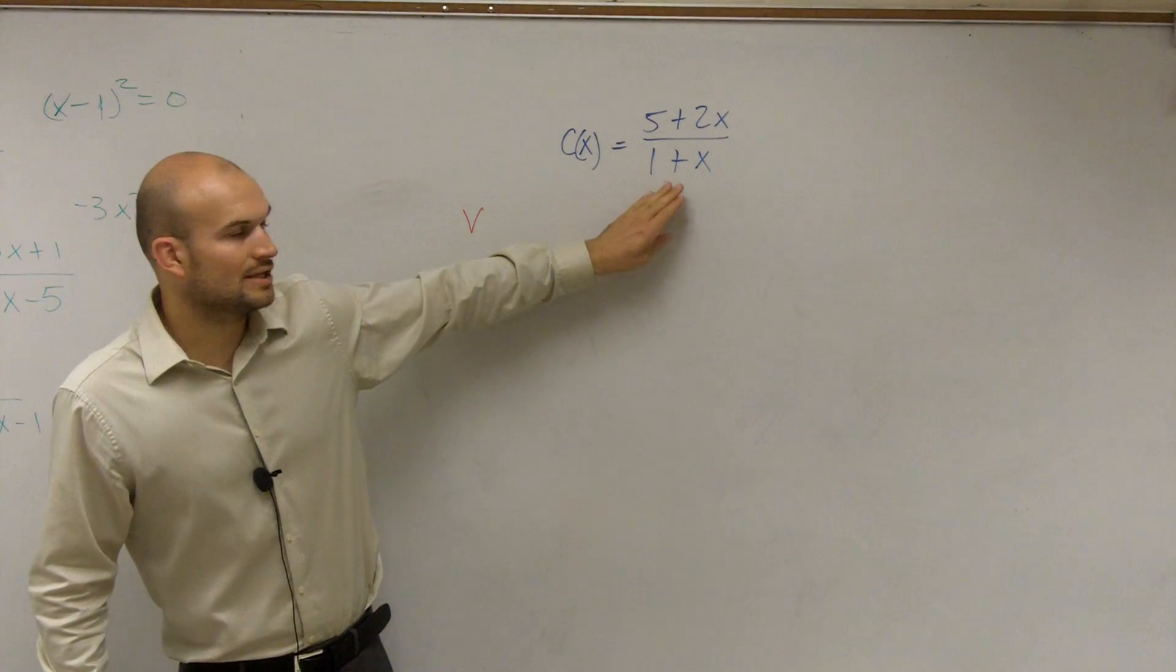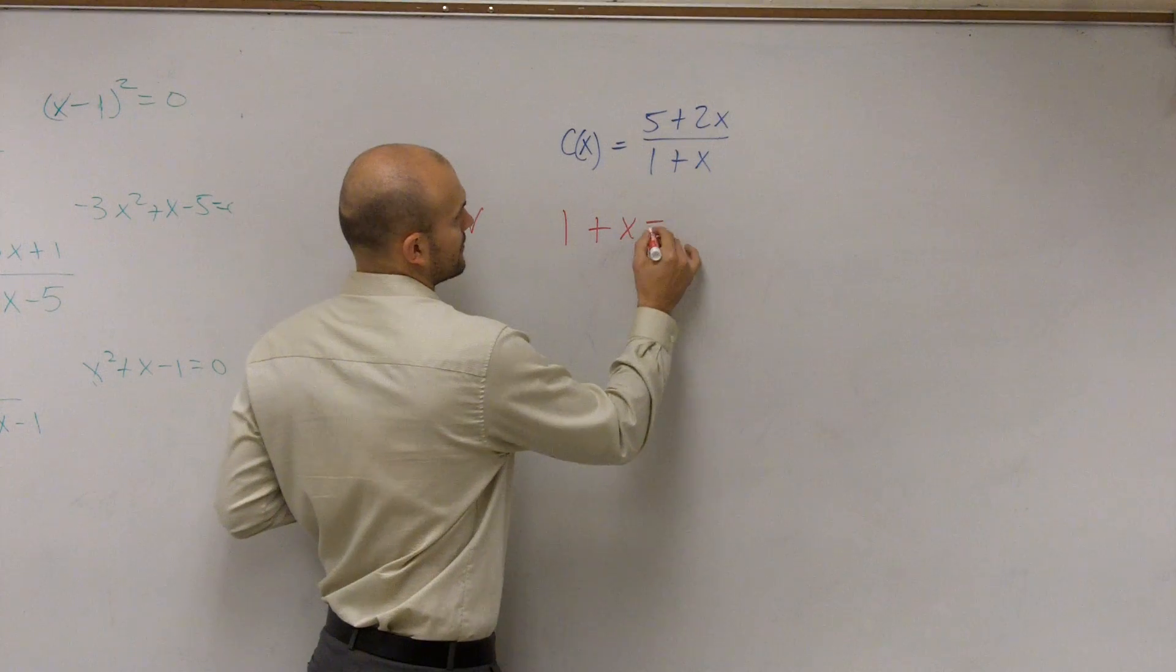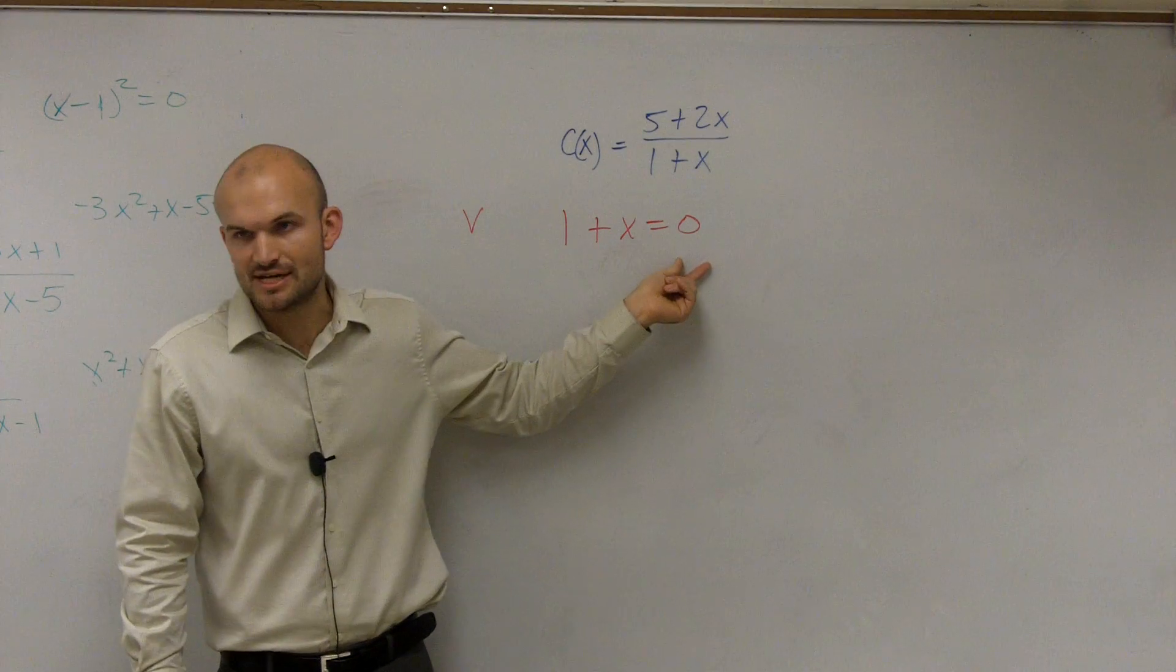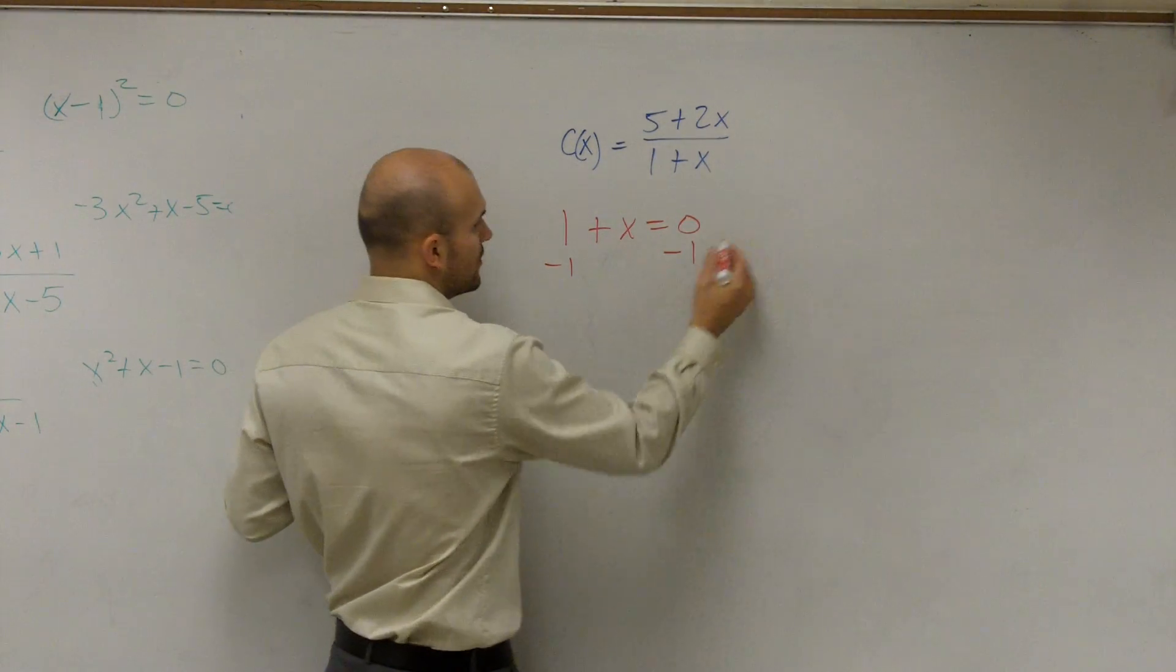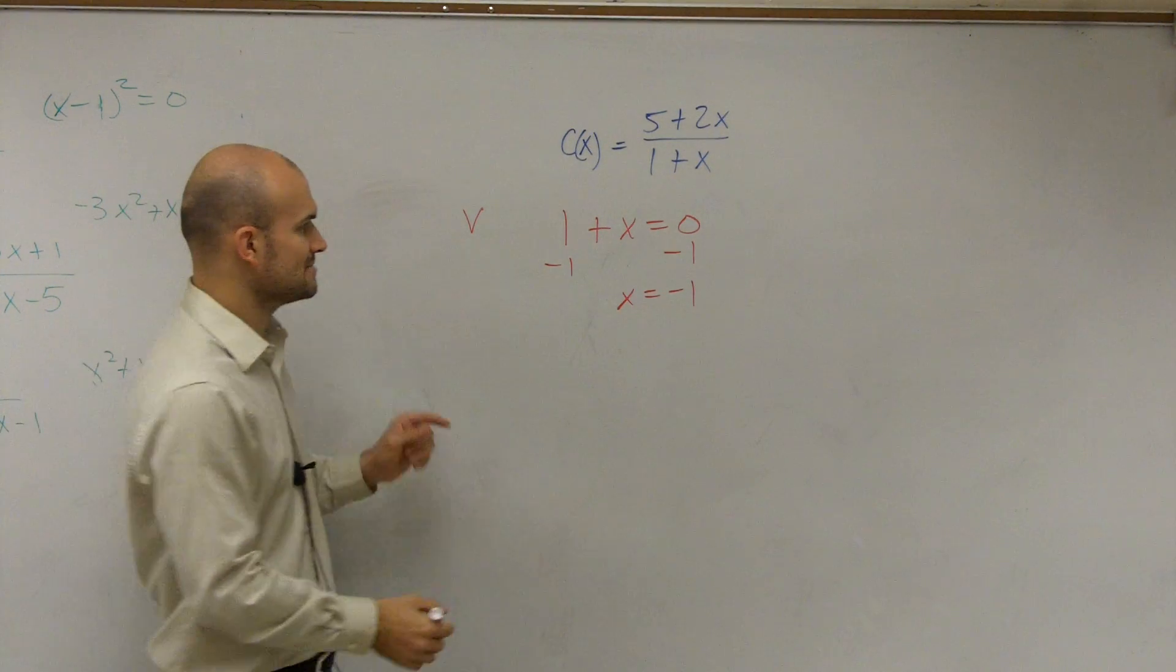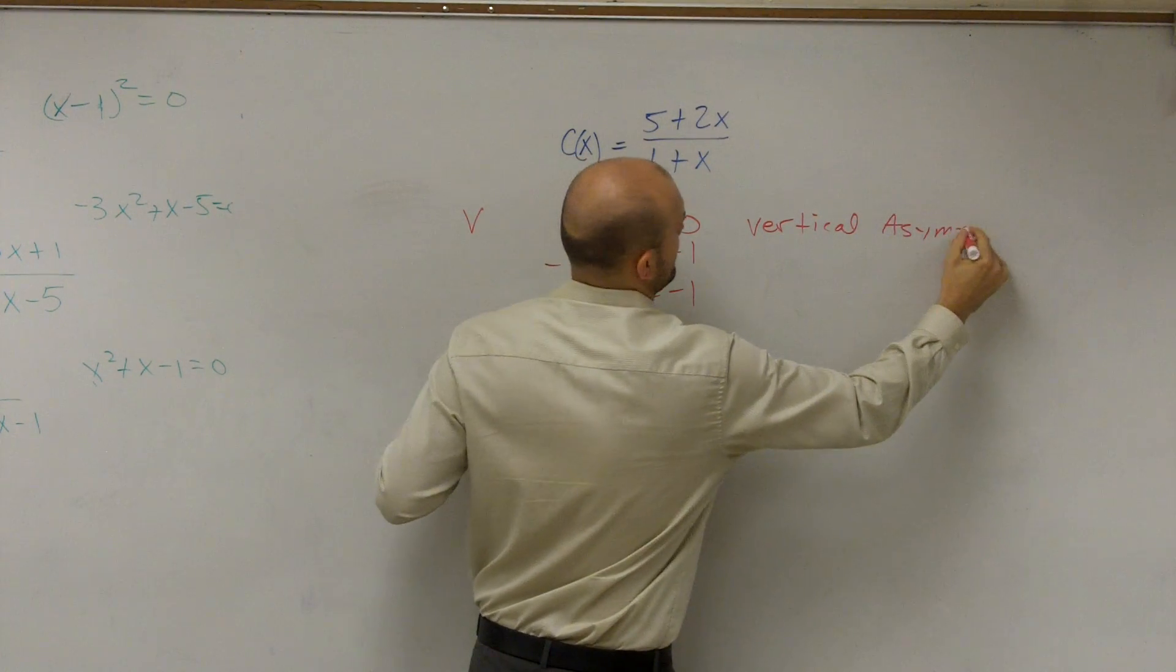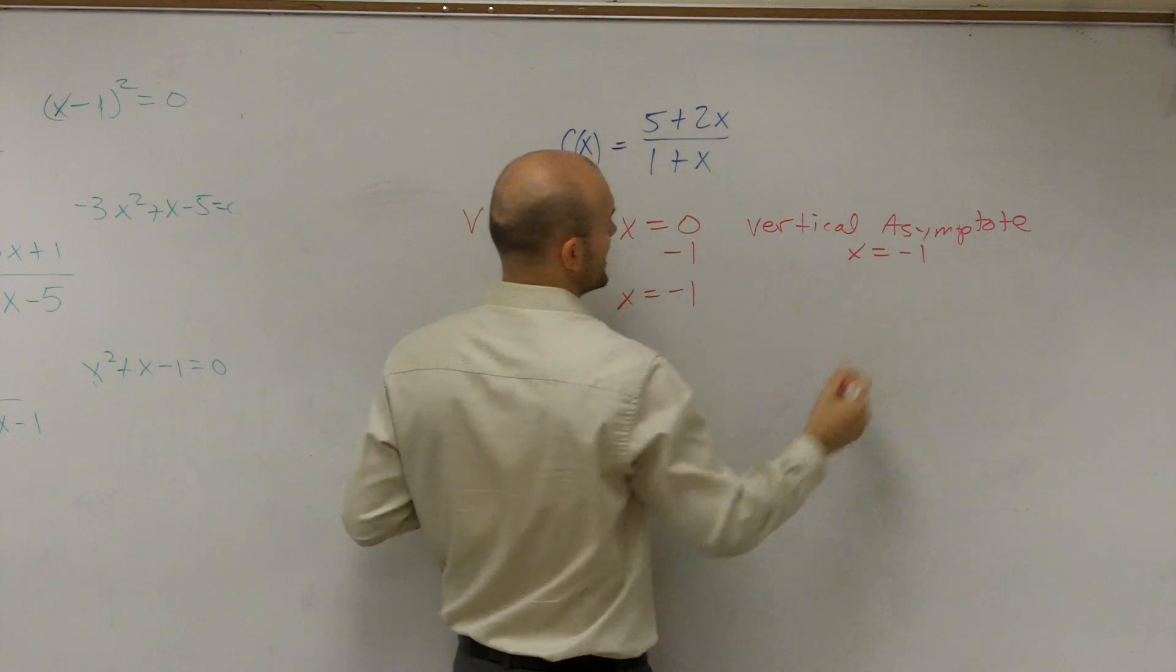So to find the vertical asymptotes, what you're going to do is take your denominator and set it equal to 0. The reason why you want to set it equal to 0 is because you want to find the values of x that make your equation equal to 0. So this one we can do in our head. However, let's just practice it so we know that x equals negative 1. So your vertical asymptote is when x equals negative 1.